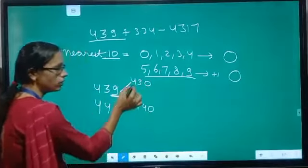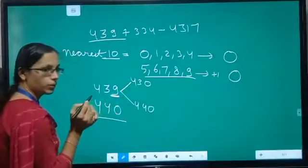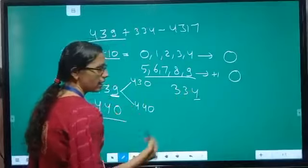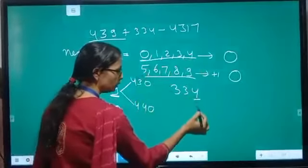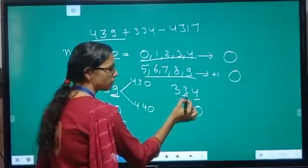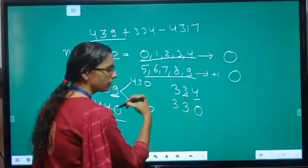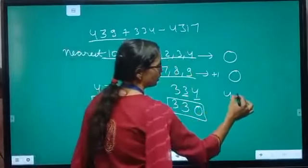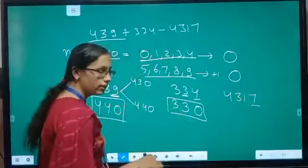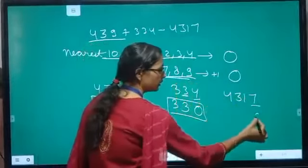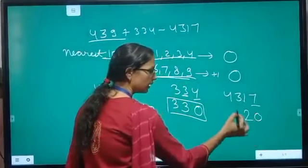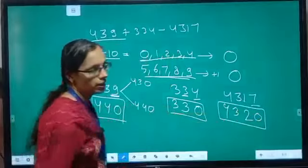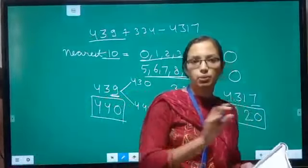For 334, the ones digit is 4, which falls in the first category, so it becomes 330. For 4,317, the ones digit is 7, so we replace it with 0 and add 1 to the tens digit 1, making it 4,320. Now simply perform the addition and subtraction: 440 plus 330 minus 4,320. This is the complete topic of estimation.